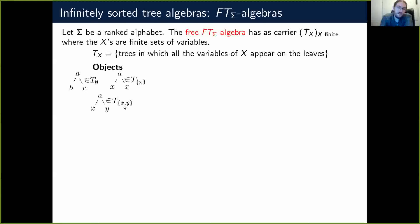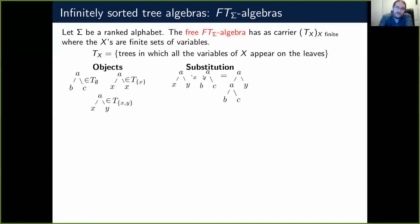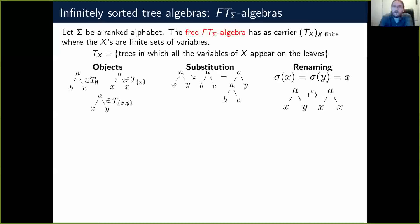Now that we have defined these objects, we can define operations on them. The first is substitution: if we have some tree with variable x, we can substitute another tree into x using the operation dot_x. So here x is replaced by the tree a, b, c. The second operation is renaming: if we have a renaming sigma that maps x and y to x, it induces an operation on trees, so the tree a, x, y is mapped to a, x, x.